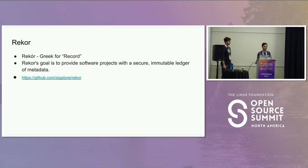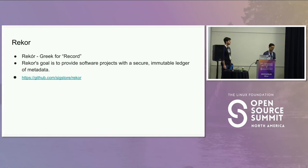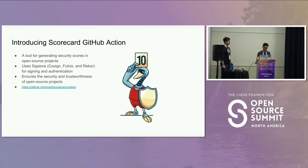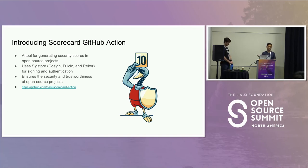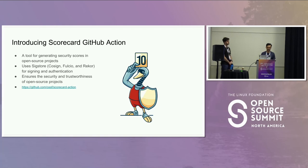The last tool of the Sigstore toolchain is Rekor. Rekor provides a secure immutable ledger for metadata. It uses Merkle tree data to ensure that it hasn't been tampered with. Scorecard uses Sigstore tools for signing results to ensure their integrity.